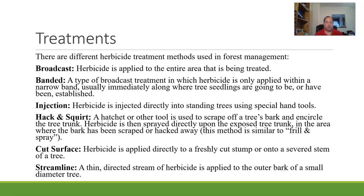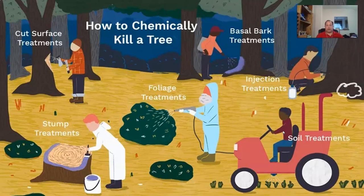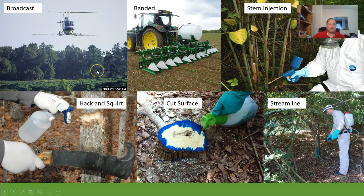Cut surface treatment involves cutting a tree down to a stump and then applying herbicide to the stump — something I've done quite a bit in my own yard. Streamline is a thin directed stream of herbicide applied to the outer bark of a small diameter tree. There's a nice picture showing people doing cut surface treatments, basal bark streamline treatments, injections, and foliar versus soil treatments.